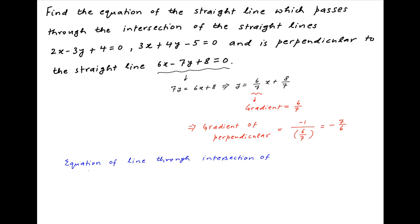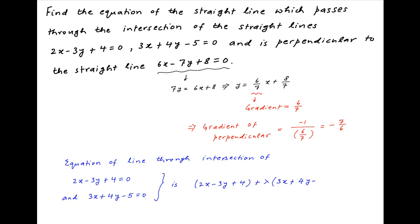Now, the equation of the line which passes through the point of intersection of the given straight lines 2x minus 3y plus 4 is equal to 0 and 3x plus 4y minus 5 is equal to 0 can be written as 2x minus 3y plus 4 plus lambda times (3x plus 4y minus 5) is equal to 0, where lambda is a parameter. This can be written as (2 plus 3lambda)x plus (minus 3 plus 4lambda)y plus 4 minus 5lambda is equal to 0.